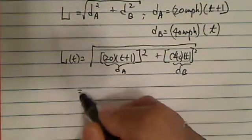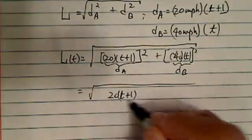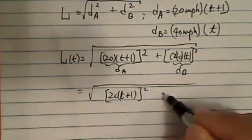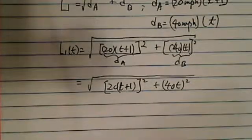Let's simplify it a little bit. So we have 20T plus 1, if this thing is squared plus 40T, the whole thing is squared over here.